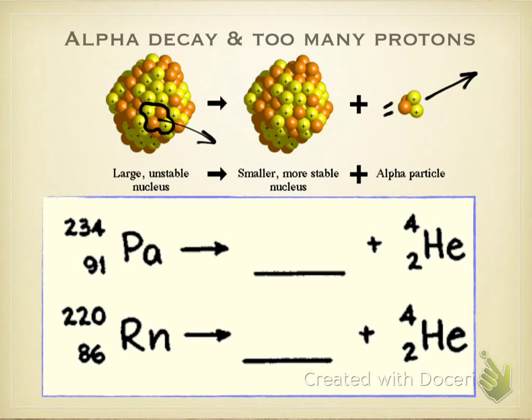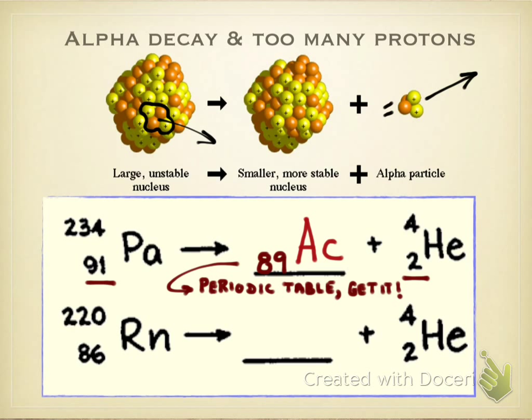So, if we look at the equation that's shown below, we have protactinium, which is PA, and it has 91 protons. Two of those protons are going to be carried away by the alpha particle. So, that leaves behind a nuclei that will have 91 minus 2, or 89 for its atomic number. Once you've determined the atomic number, you can pull out your handy periodic table and look up what is atomic number 89. And if you do so, you should find that that is AC, and you can write that down in that space.